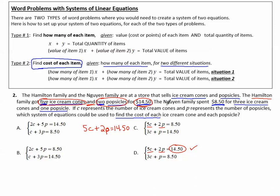The Nguyen family, our second situation, spent $8.50 total for three ice cream cones, so that's 3C, and one popsicle plus 1P.